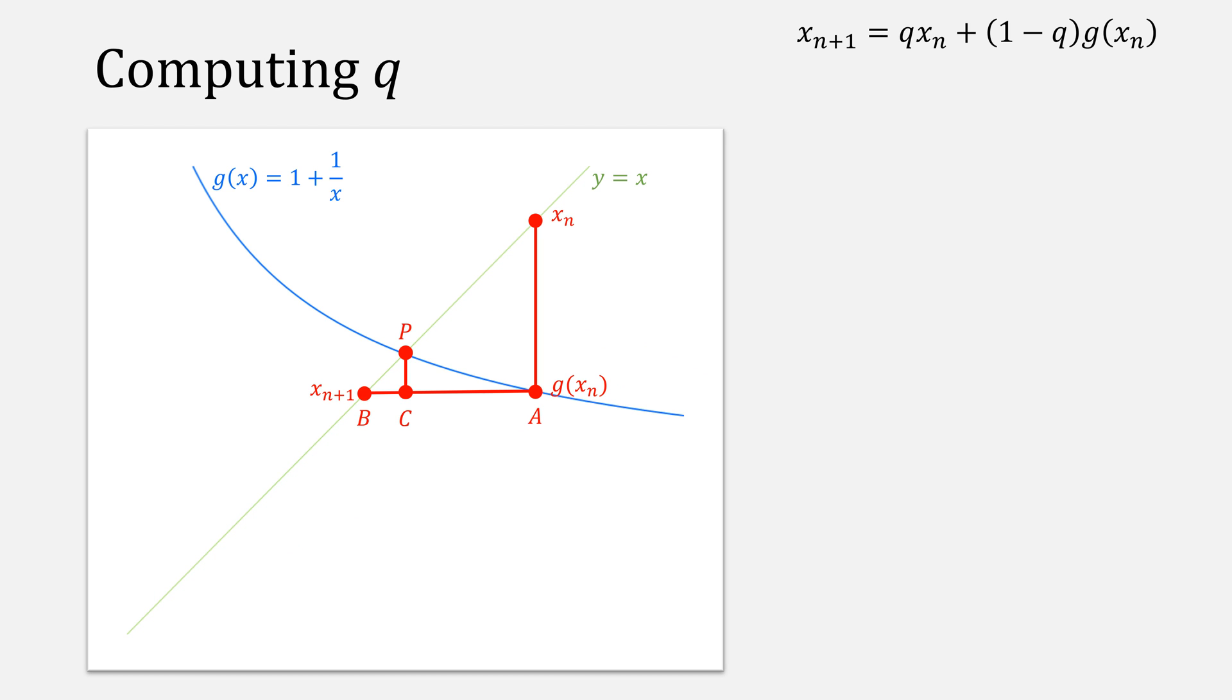Starting from Wegstein's method, the best value for q is the chord bc divided by the chord ba, which we could represent like this. The trouble is, we don't know the value of c. We do know that the chord bc is equal to the chord pc because this makes an isosceles right triangle.